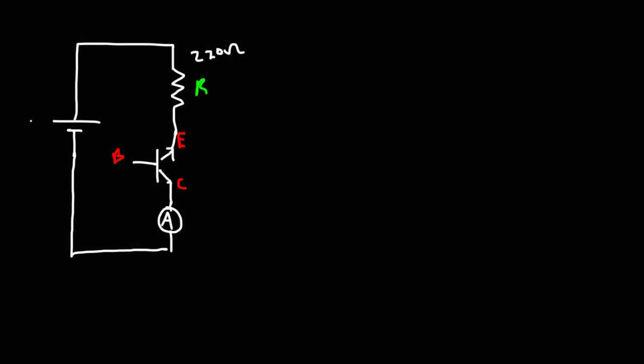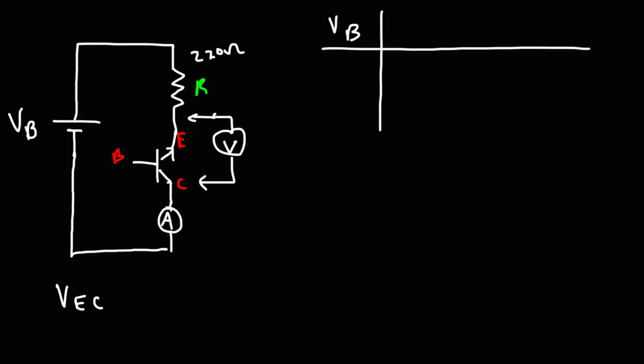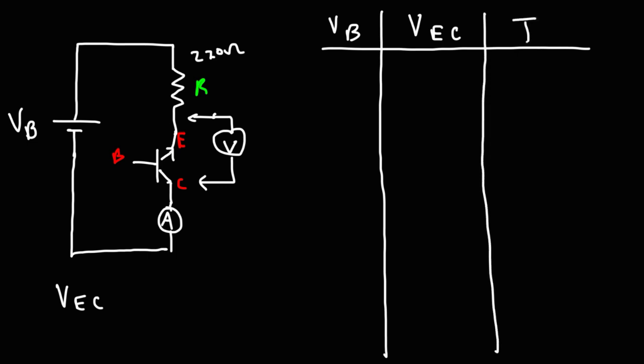The ammeter is connected between the collector of the transistor and the negative terminal of the battery. Here we have the emitter, the collector, and the base. The resistor used in this experiment is a 220 ohm resistor. The battery voltage will vary — I'll call this VB. I have a voltmeter connected across the emitter and the collector region, which we'll call VEC, the emitter-collector voltage.